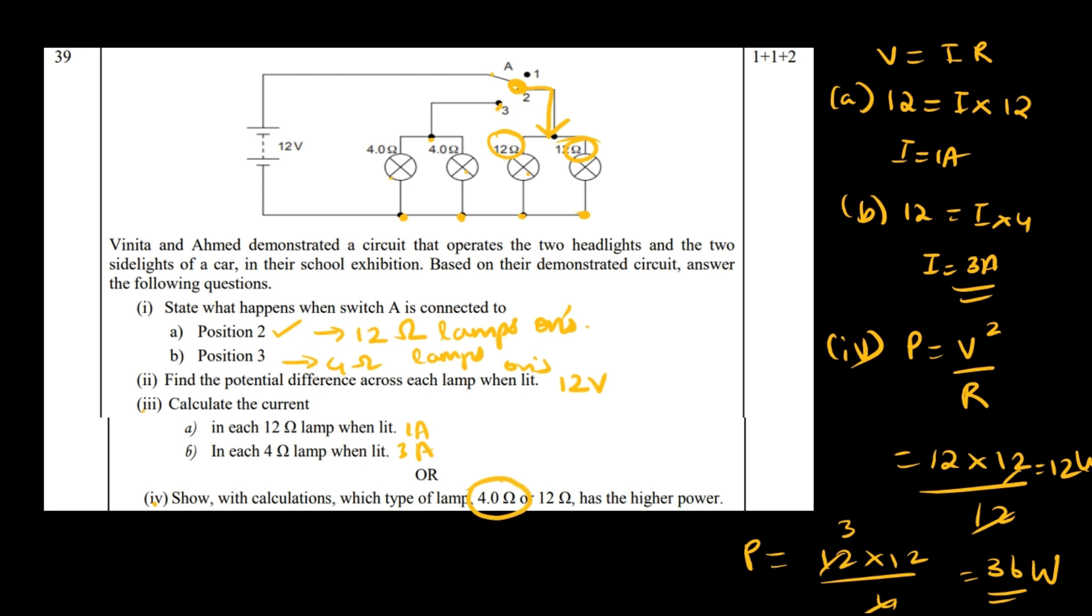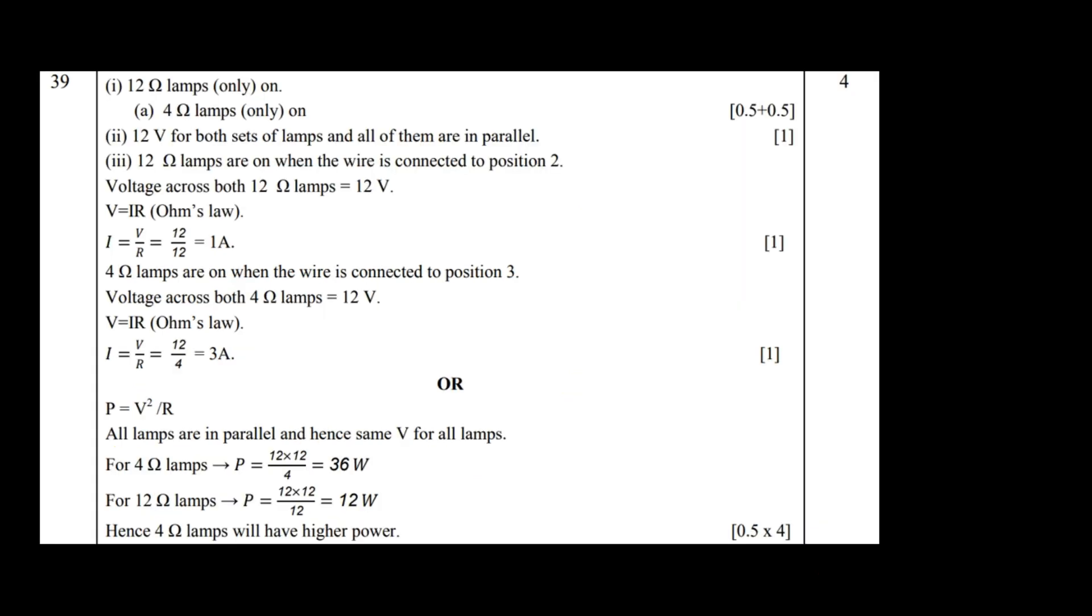Let's see how they give you the marking here. For the first question, half mark for each part. Second question, one mark straight just for telling it's 12 volts. Next one is finding the current, 1 mark each, fair enough. Then a half mark for each step in the power calculation, and a half mark for telling which has the higher power.